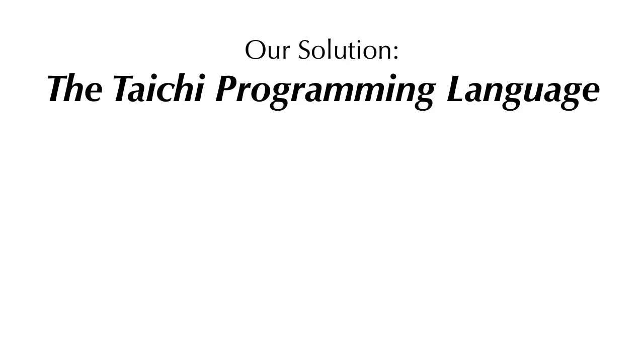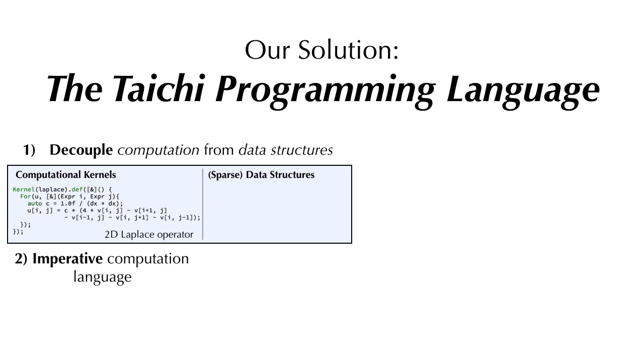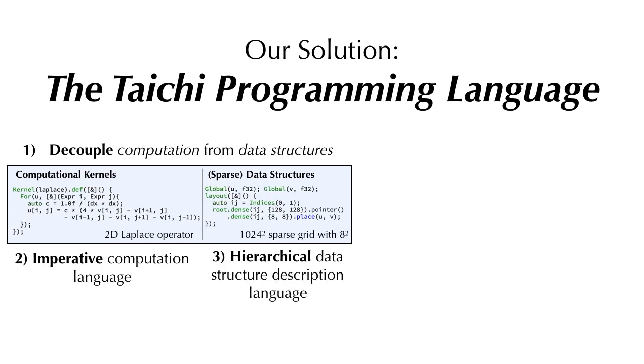To make high-performance sparse computation easier, we developed the Tai Chi programming language. Tai Chi decouples the definition of computation from that of data structures. The computational kernels are defined using an imperative language, and the data structures are specified independently using a hierarchical description language.